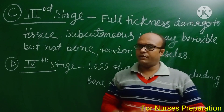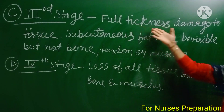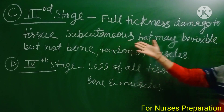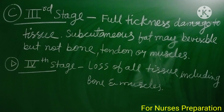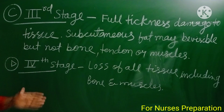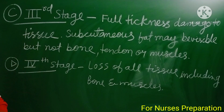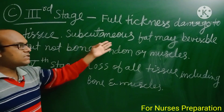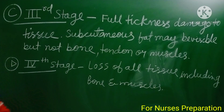Stage 3: In this stage there is full thickness damage to tissue. Subcutaneous fat may be visible, but the damage has not yet reached the bone, tendon, or muscles. A bedsore is classified as Stage 3 when there is significant full thickness tissue damage with visible subcutaneous fat.